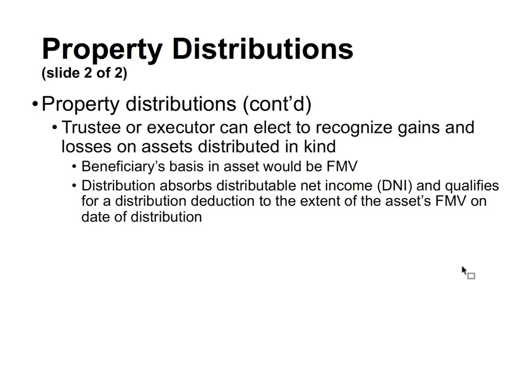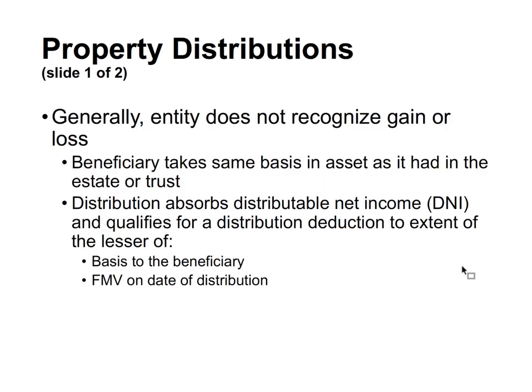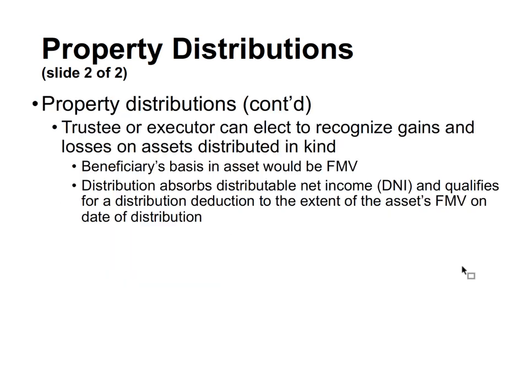The trustee or executor can elect to recognize gains and losses on assets distributed in kind. If that election is made, the beneficiary takes a basis equal to fair market value. So the general rule is that the trust or estate does not have to recognize gain or loss — the beneficiary takes a carryover basis. But if the election is made, the entity recognizes gain or loss and the beneficiary takes fair market value as basis. Notably, unlike C corporations, here the entity can actually recognize a loss on the election — that's a key difference.